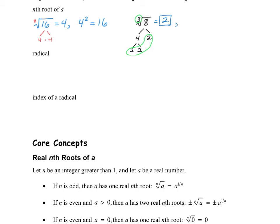The reason why is because 2 to the power of 3 equals 8. And we can extend that even further. We could say that the fourth root of 81 is 3, because 81 is 9 times 9, and then 9 is 3 times 3, and this 9 is also 3 times 3. So we have four 3s, and we have an index of 4. The fourth root of 81 is 3 because 3 to the power of 4 equals 81.